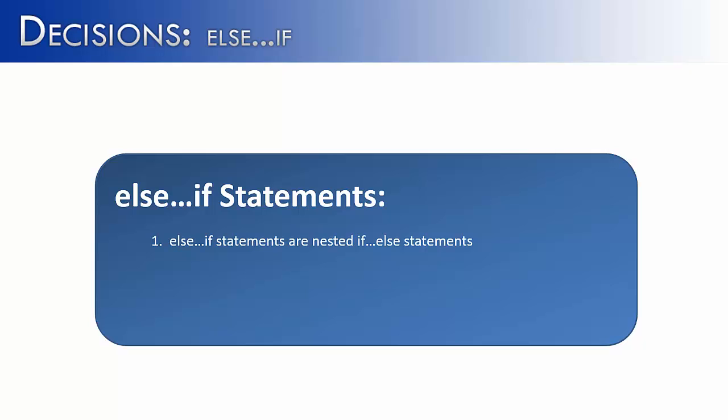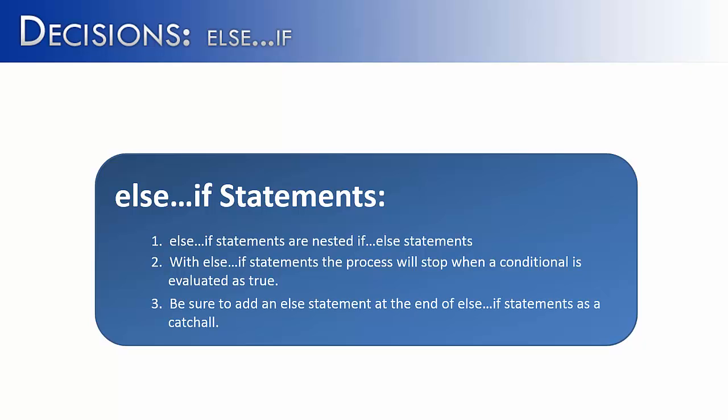Else if statements, which are really just nested if-else statements, are an excellent way to do multiple decisions. Because the process will stop when a conditional is evaluated to true. So like we saw in the last example, when it reached baseball, it stopped and it didn't keep on going. And finally, if you're going to use else if statements, or nested if-else statements, be sure to add that else at the end. Because what it's doing is, it's going to catch any condition you might not have thought of or coded above, and say, if all else fails, do this.